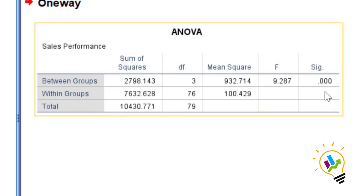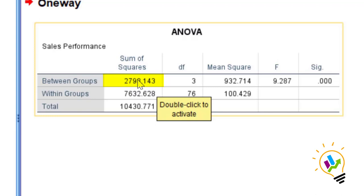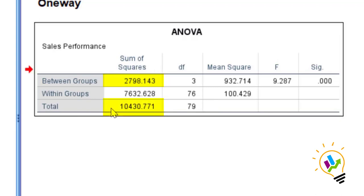Since the significant value is less than 0.05, there is a significant difference between the sales groups towards sales performance. When there is a significant difference between the groups, we must know the effect size. To calculate effect size, we need two values: the sum of squares between groups and the sum of squares total.